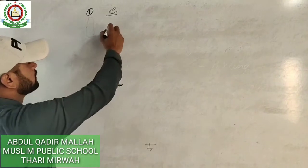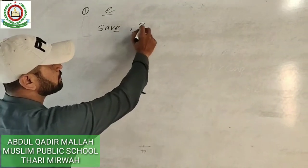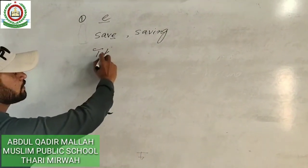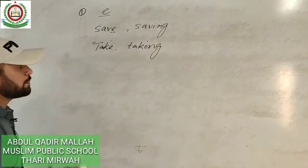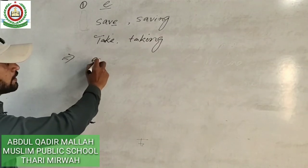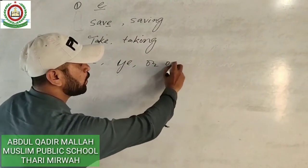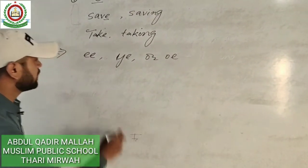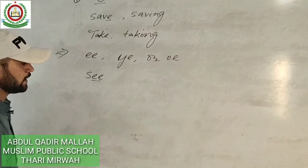If a word ends with a silent 'e,' we remove the 'e' and then add -ing. For example, 'save' — remove the 'e,' and it becomes 'saving.' Similarly, 'take' becomes 'taking.' However, there is an exception: if a word ends with double 'e,' we do not remove either 'e' — we directly add -ing.